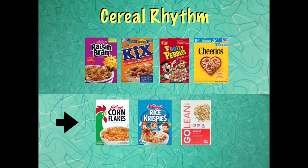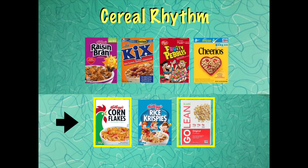Let's take a look at the second column of cereals. Please be my echo. Cornflakes, Rice Krispies, Kashi. Can you figure out which other cereal has the same rhythm as Cornflakes? Is it Rice Krispies or Kashi? If you said Kashi, you are correct. Cornflakes and Kashi both have a do-do rhythm.